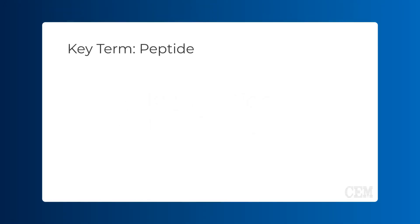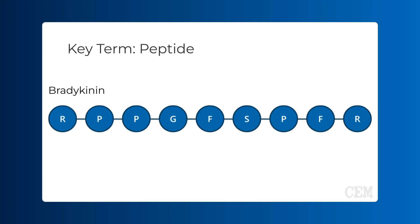Where else to start if not with the term peptide? A peptide is a short chain of amino acids linked together by peptide bonds. Here is a simplified depiction of bradykinin, a peptide that plays crucial roles in inflammatory response, blood pressure regulation, and pain signaling. Each lettered circle represents an amino acid, and the link between each circle represents a peptide bond.